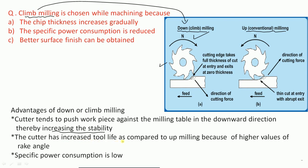In climb milling, the cutter has increased tool life compared to up milling due to higher values of rake angle. Specific power consumption is also low in climb milling. Therefore, option B is correct — specific power consumption is reduced. The chip thickness increasing gradually does not provide technical justification for choosing climb milling.